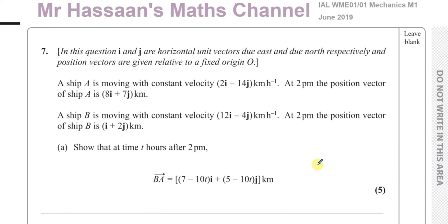This is all about vectors. The question states that i and j are horizontal unit vectors due east and due north respectively, and position vectors are given relative to a fixed origin O. So when you're looking down at your page, the direction of i is east and the direction of j is north — one unit to the right and one unit upwards on your paper.